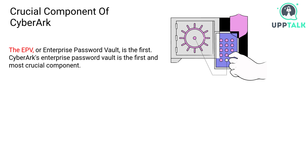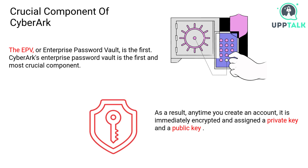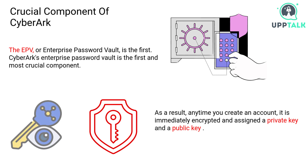Any time you create an account, it is immediately encrypted and assigned a private key and a public key. There is no way to compromise the credentials — even if you're an administrator, you won't be able to view them. The EPV also encrypts sessions. When a session on a target system is completed, it is logged off, uploaded to the vault, and encrypted. Even as an administrator, you can view what happened throughout that login session.